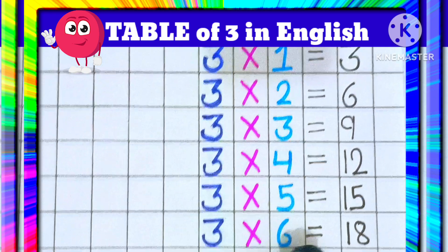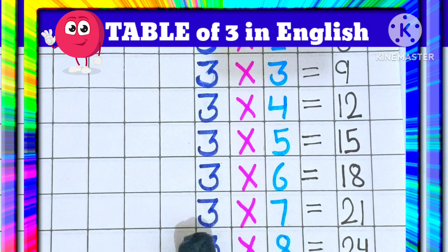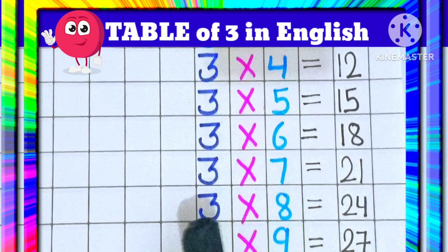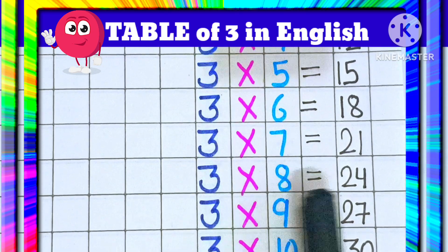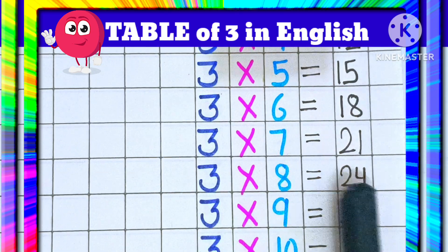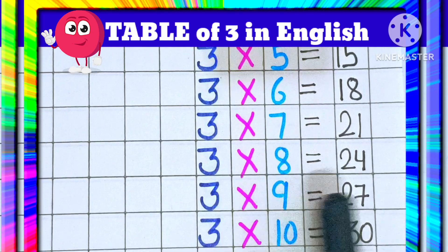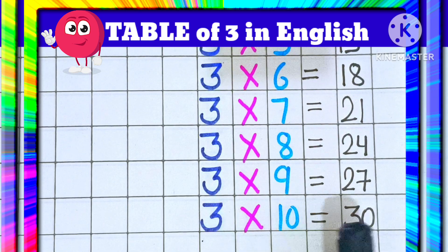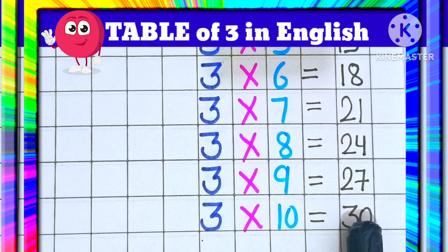3 6's are 18. 3 7's are 21. 3 8's are 24. 3 9's are 27. 3 10's are 30.